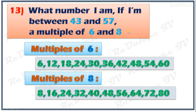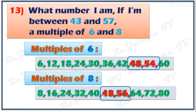The numbers between 43 and 57 from the multiples of 6 are 48 and 54. From the multiples of 8, the numbers between 43 and 57 are 48 and 56. The common number in multiples of 6 and multiples of 8 is 48. So the answer is 48.